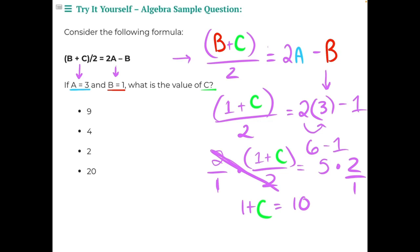And the last step to isolate c would be to move this 1 over to the other side. 1 is being added to c, so we need to do the opposite, subtract 1 from both sides, and that will give us c equals 9, making our first option our correct answer.